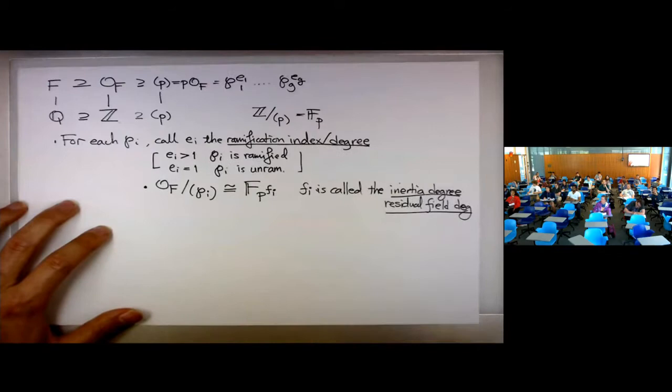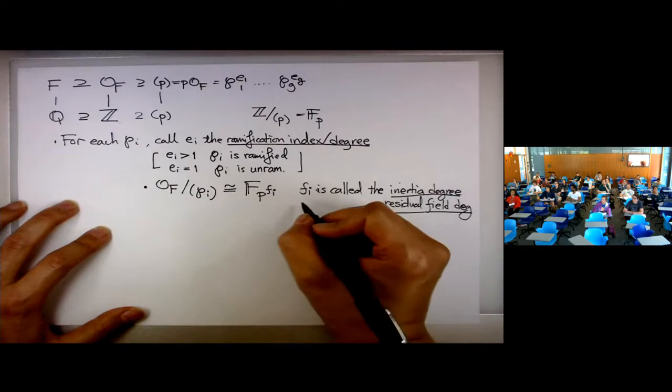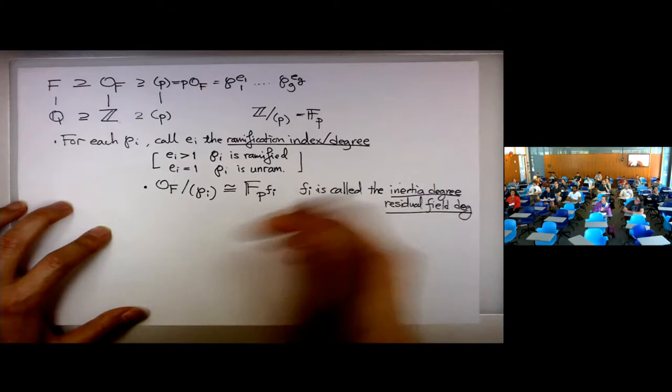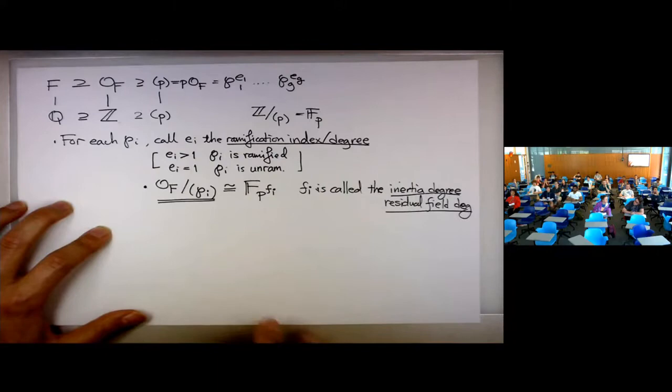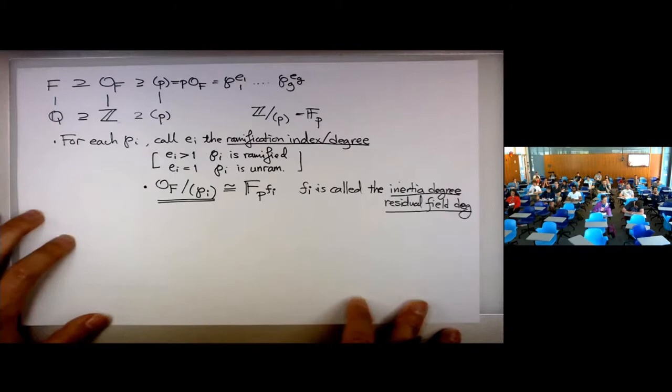What is Fi? It's the exponent such that the residue field OF/Pi has cardinality P^Fi. So you take the quotient and count the cardinality — that's going to be a power of P. The exponent is the inertia degree.